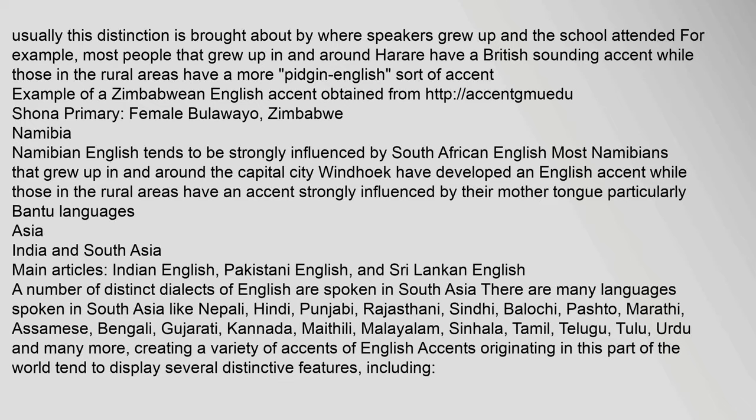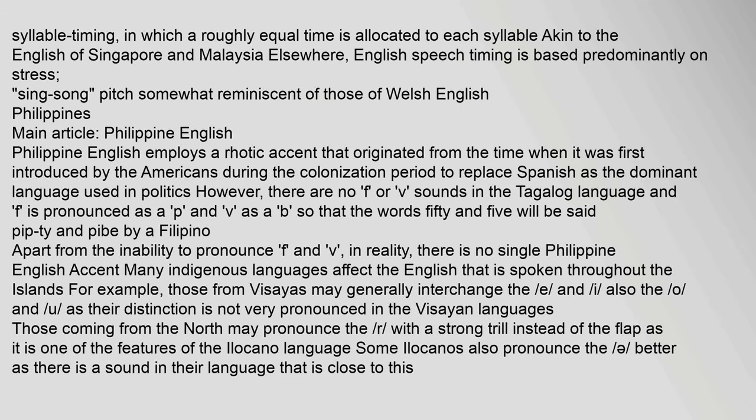In Asia, a number of distinct dialects of English are spoken in South Asia. There are many languages spoken in South Asia, including Nepali, Hindi, Punjabi, Rajasthani, Sindhi, Pashto, Marathi, Bengali, Gujarati, Kannada, Malayalam, Sinhala, Tamil, Telugu, Urdu, and many more, creating a variety of English accents. Accents originating in this part of the world tend to display several distinctive features, including syllable timing — in which a roughly equal time is allocated to each syllable — akin to the English of Singapore and Malaysia. Elsewhere, English speech timing is based predominantly on stress, with a sing-song pitch somewhat reminiscent of Welsh English.